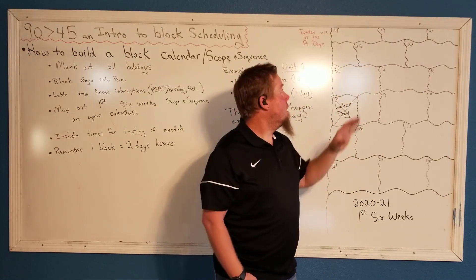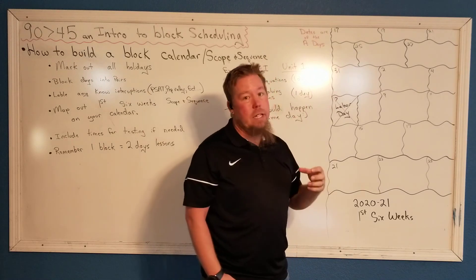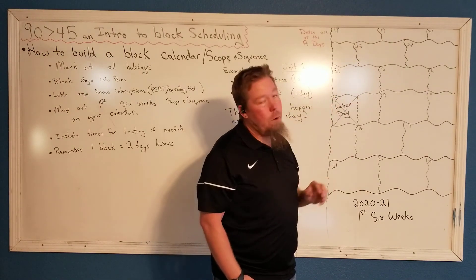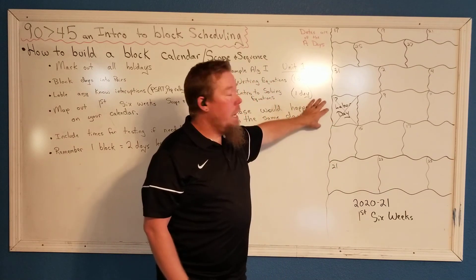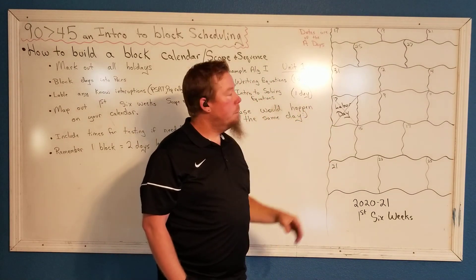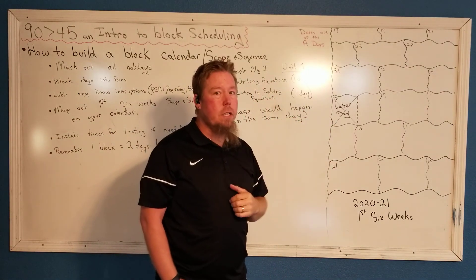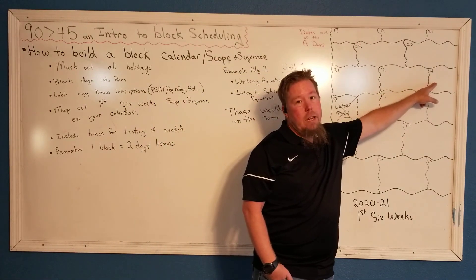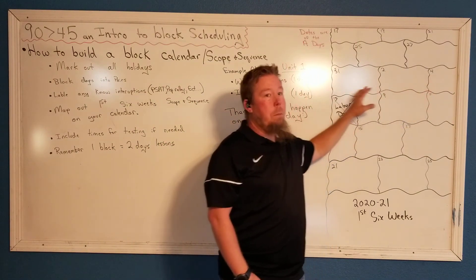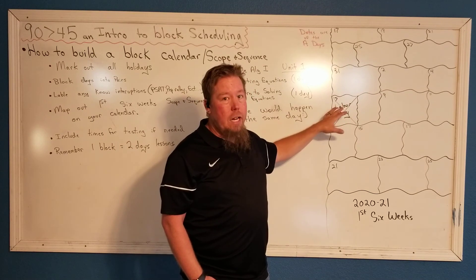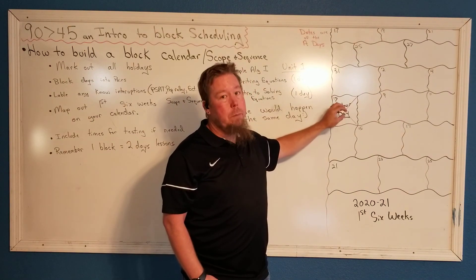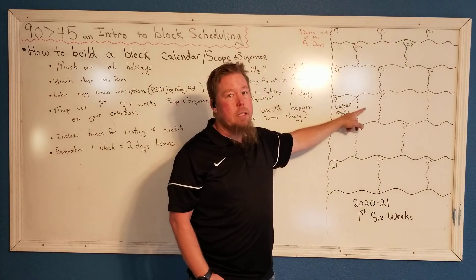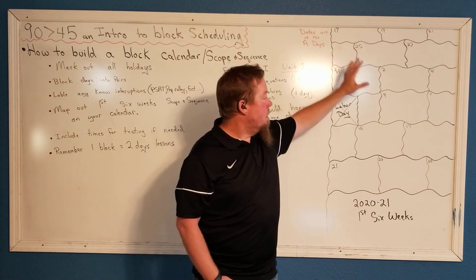My suggestion is to put the dates for what I call the A days — that's going to be your first day of the block. So I just put the dates for all my A days. Notice we have Labor Day here on September 7th — no school that day. In block scheduling, if Friday was an A day on September 4th and we miss Monday, that doesn't mean we miss a B day. That Tuesday would just be a B day instead of that Monday.